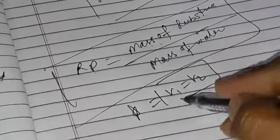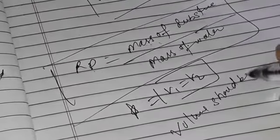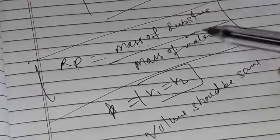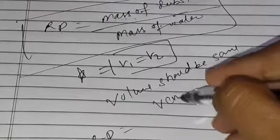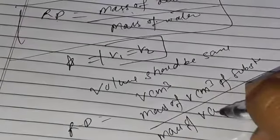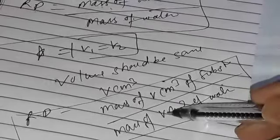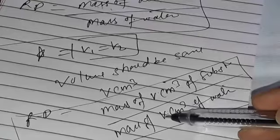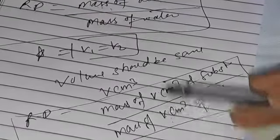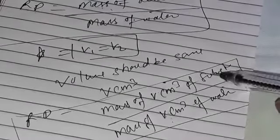Remember, this formula applies with the condition that v1 equals v2 — the volume of the substance must be the same as the volume of water. So the formula is: mass of V centimeter cube of substance upon mass of V centimeter cube of water. Whatever volume you choose for the substance, you must use the same volume for water.